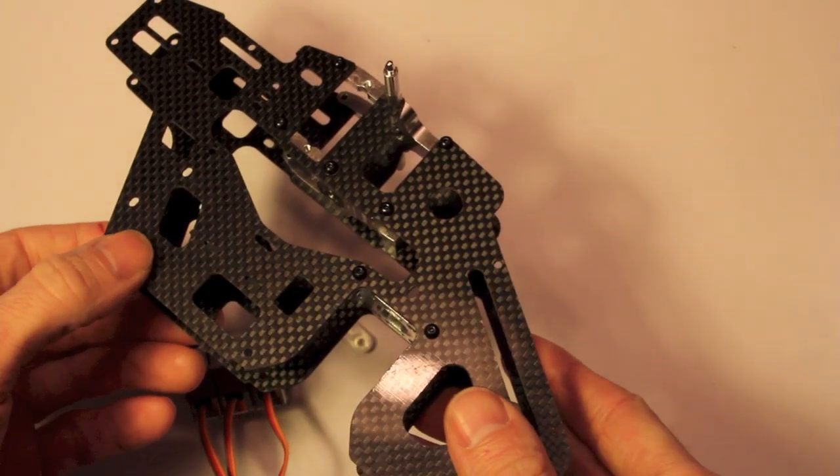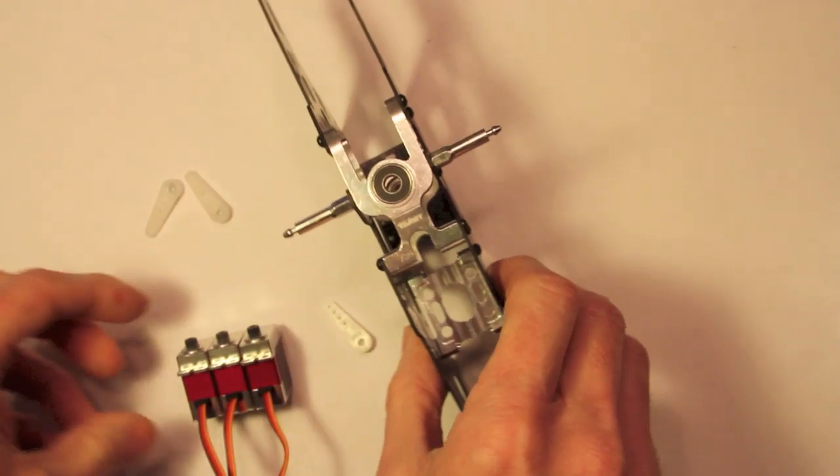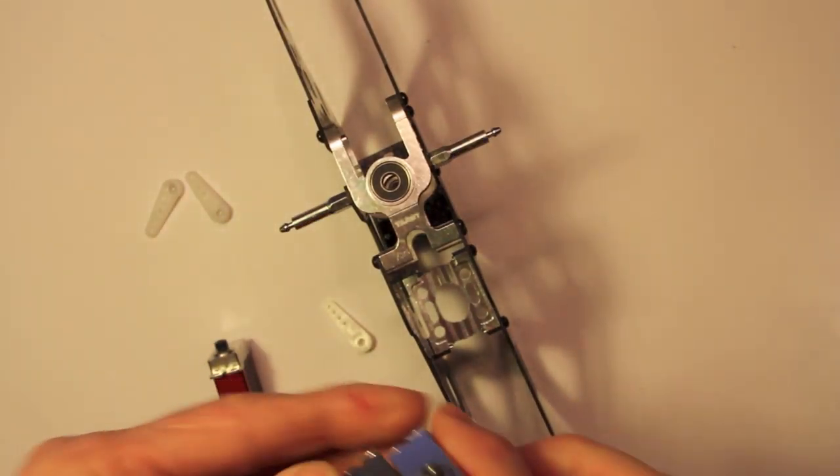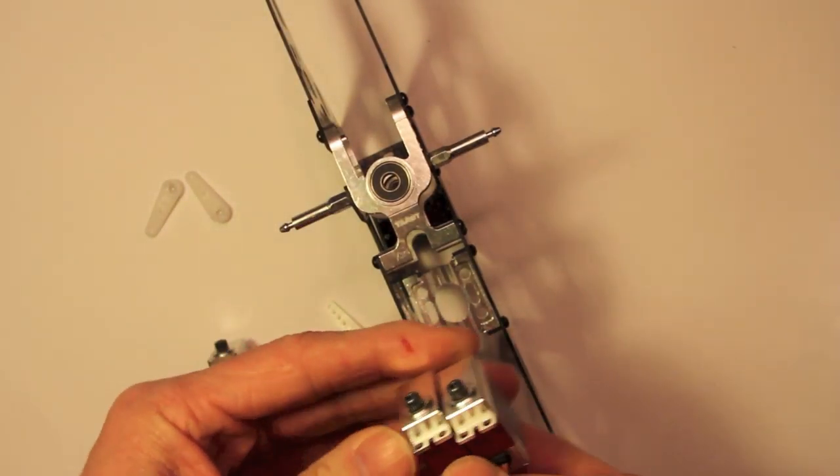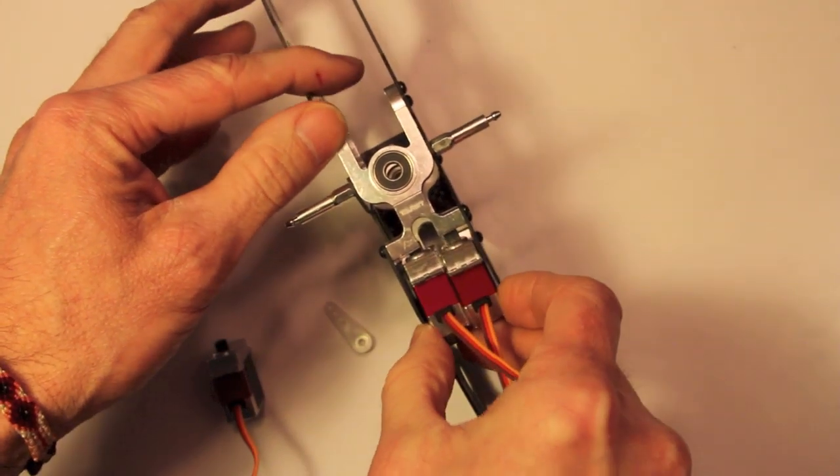Looking at the frame of the helicopter, this is the forward battery tray. We're going to end up with two servos that will go into the front and mount that way.